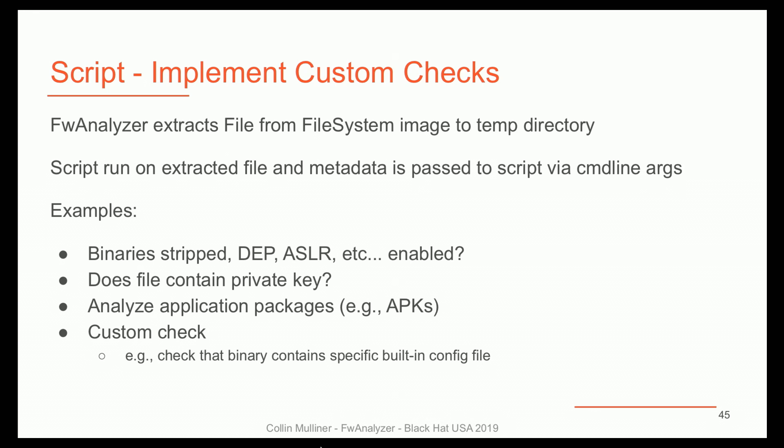You can also just run scripts for a little bit more custom checks. The firmware analyzer will extract the file from the directory, dump it in a temp directory, and the script runs against it — so the script doesn't have to know anything about the underlying file system. You can build cool things like: detect if files are stripped, or if DEP or ASLR is enabled, check if files maybe contain private keys, or if you have an Android device, pull out every APK and run your custom checker against it. There are a lot of different things you can do.